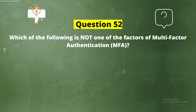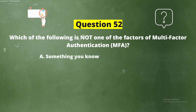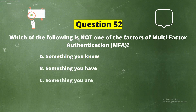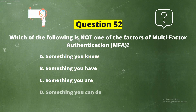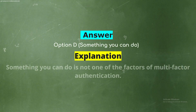Question 52: Which of the following is not one of the factors of multi-factor authentication (MFA)? Options: Option A, Something you know; Option B, Something you have; Option C, Something you are; Option D, Something you can do. The correct answer is Option D, Something you can do — it is not one of the factors of multi-factor authentication.